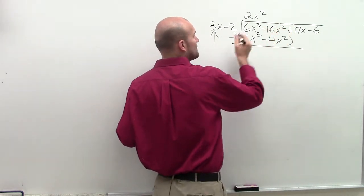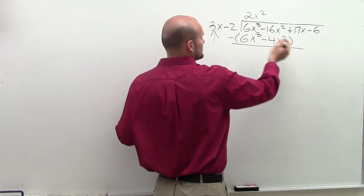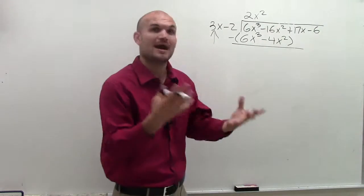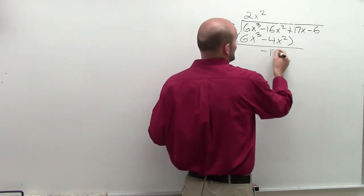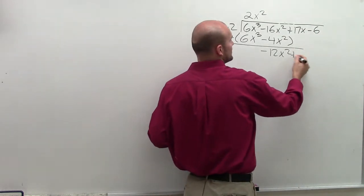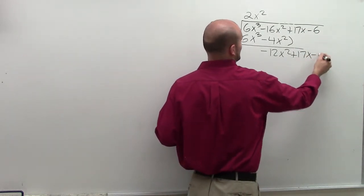Negative 16x squared minus a negative 4x squared. Now, a minus and negative becomes positive, so now I'm left with negative 12x squared. I have zeros here, so you could just bring down the 17x and the negative 6.